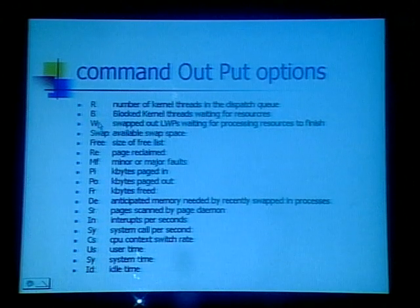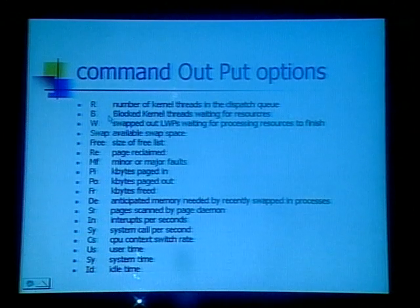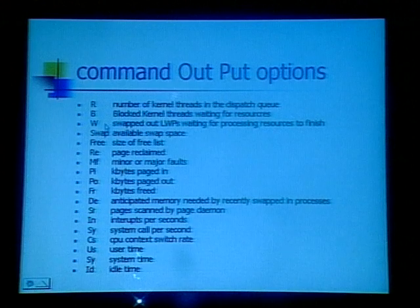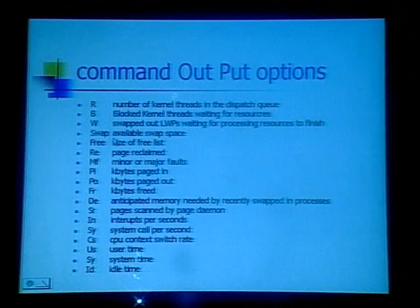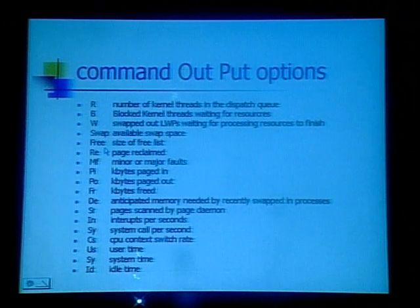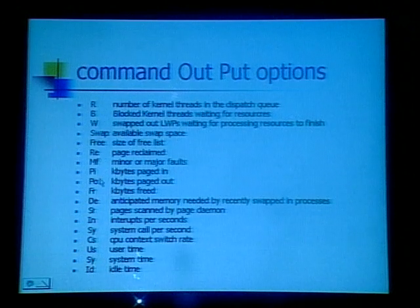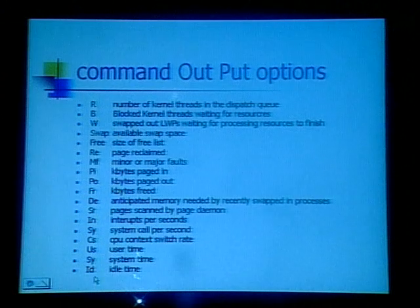The VMStat command output options include: R — the number of kernel threads in the dispatch queue; B — blocked kernel threads; W — swapped out LWPs waiting for processing; swap — available swap space; free — how much is free; pages reclaimed; kilobytes paged in; kilobytes paged out, and so on.